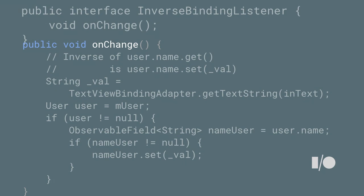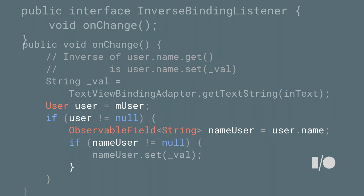Your binding implements the InverseBindingListener for you. This is code almost straight out of the generated code. It gets the text from the view, then does null checking, and finally sets the field — you can see it's setting this field as an observable field. The comment here is actually in the generated code, so if you go look at the generated code you'll see it and understand what the inverse of this expression is, to help you debug if you have a problem.